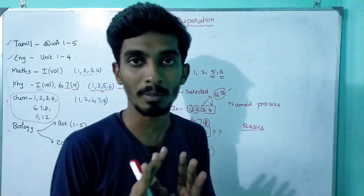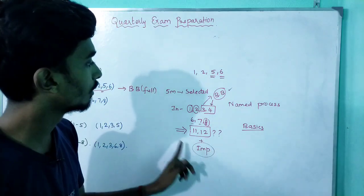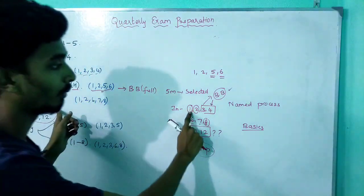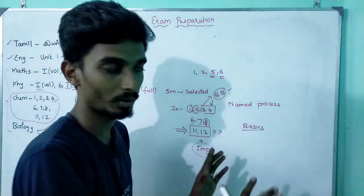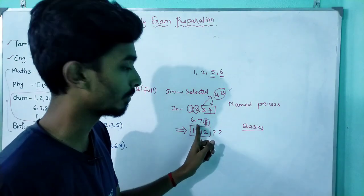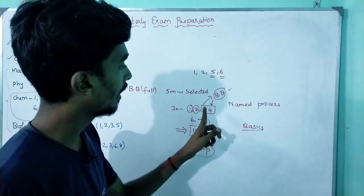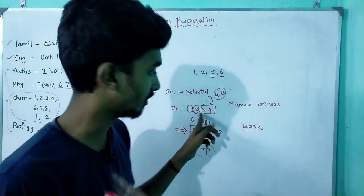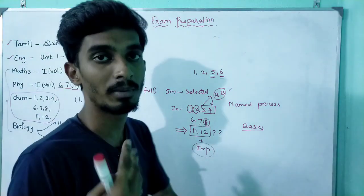So the chemistry plan is: chapters 1, 2, 6, 7, 8 first, then chapters 4, 3, 11, and 12. We will discuss the questions for each.